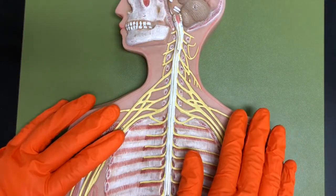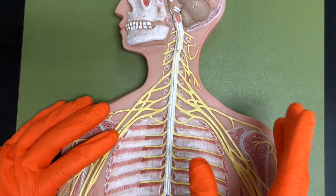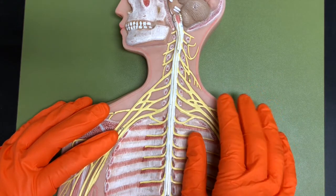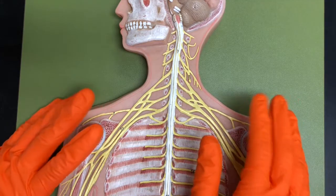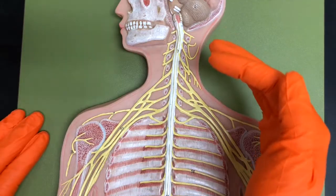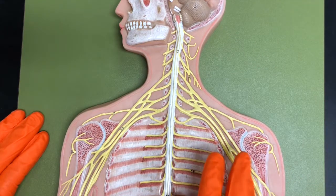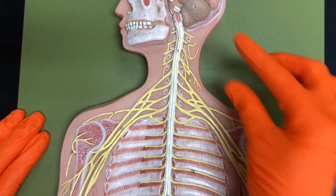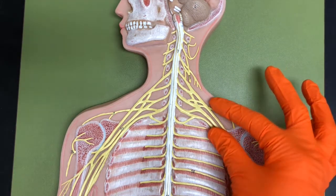Let's discuss plexuses. Plexuses are going to be groups of nerves that actually come from bundles of anterior rami. Up here in the superior portion on this model I have, I'm showing you two of them. We have the cervical plexus and the brachial plexus.